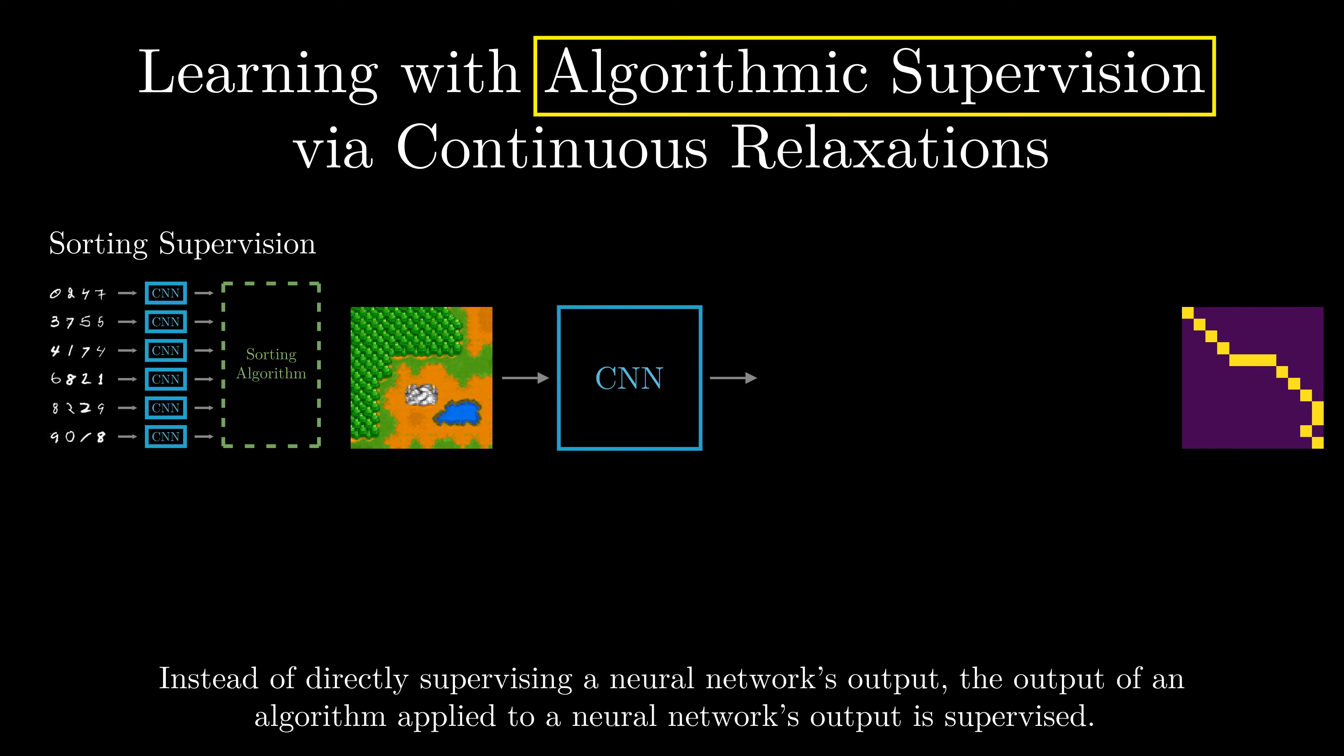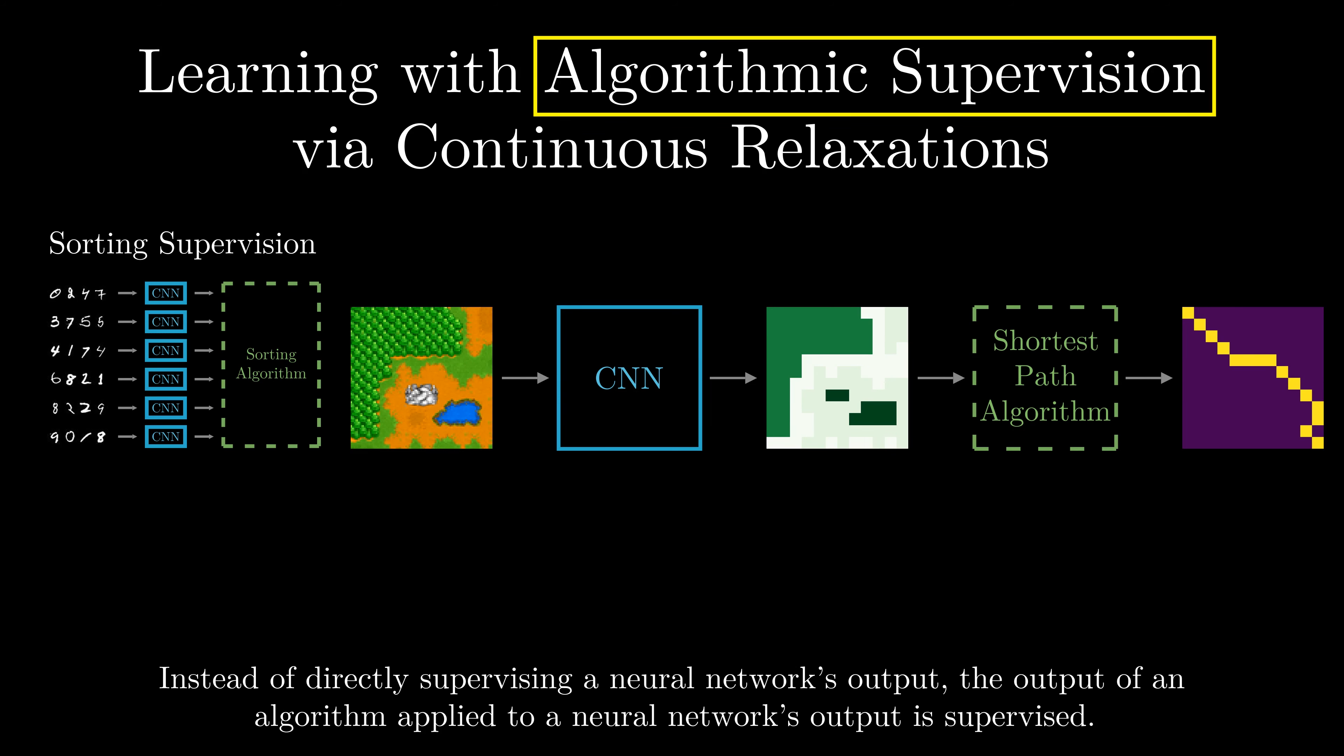Here we can integrate a classic algorithm to make the architecture more reliable. With that, the neural network only has to predict the hidden cost embedding while the actual computation of the shortest path is deferred to the algorithm.